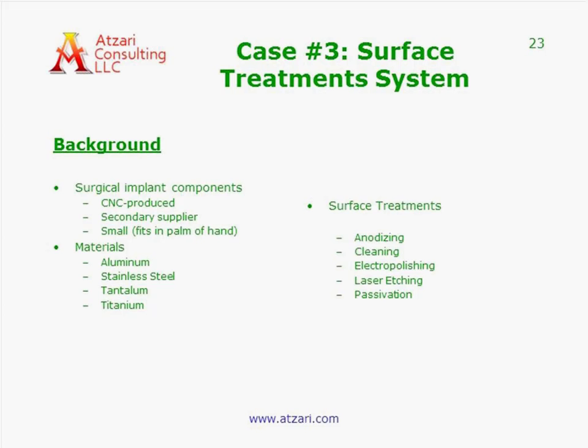The next case is the surface treatment system. Washer disinfection was part of that, but it was actually doing many other things. This was a plant in the US — they were making small implantable components that they would sell to final medical device companies. Essentially, it was a glorified CNC shop that happened to be making medical device components. It was a small company of 20 people — even the CEO had a tool cart next to his desk and was an expert CNC machinist.